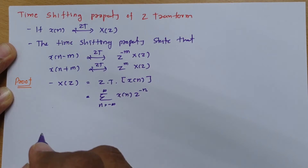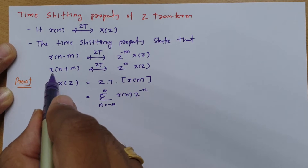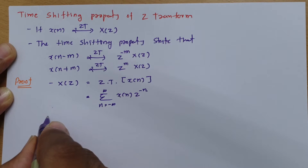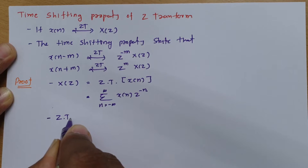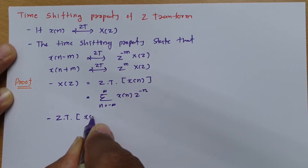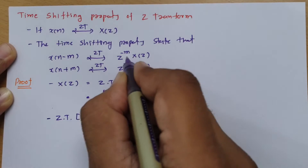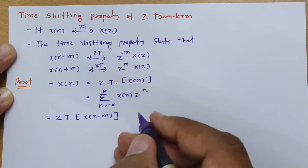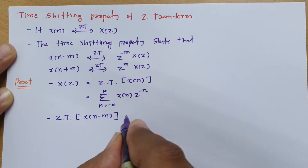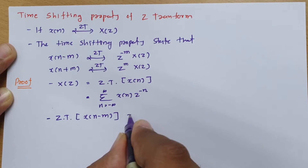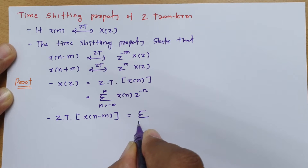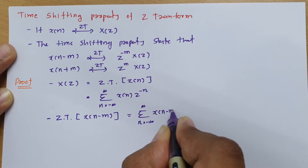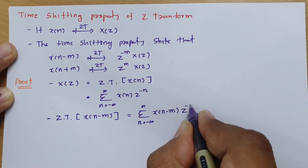Now what I will be doing is I will calculate the z-transform of x of n minus m. So if I calculate the z-transform of x of n minus m, then that has to be z to the power minus m into x of z — that is what we are going to prove. So z-transform of x of n minus m is summation n varies from minus infinite to infinite, of x of n minus m into z to the power minus n.